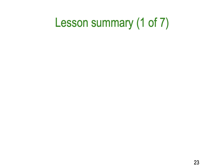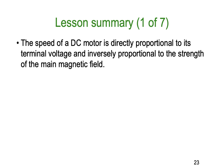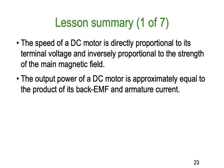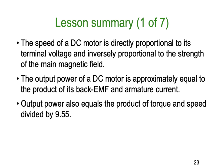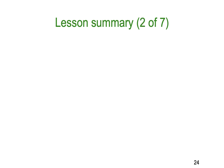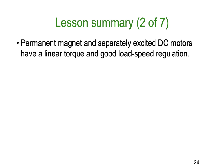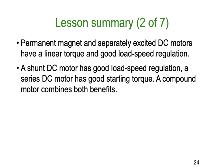Let's summarize. The speed of a DC motor is directly proportional to its terminal voltage and inversely proportional to the strength of the magnetic field. The output power of a DC motor is approximately equal to the product of the back EMF and the armature current. The output power also equals the product of torque and speed divided by 9.55. Permanent magnet and separately excited DC motors have nice linear torque and good load speed regulation. A shunt DC motor has good load speed regulation, a series DC motor has good starting torque, and a compound motor has a combination of both characteristics.